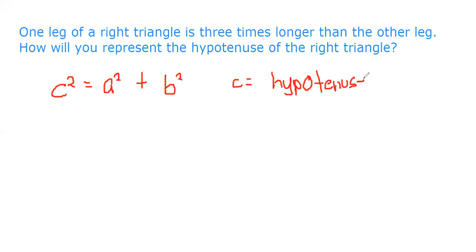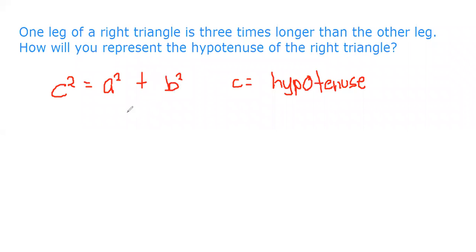The Pythagorean theorem states: c² = a² + b², where c is the hypotenuse and a and b are the other two legs. Let a = leg 1 and b = leg 2. Since one leg is 3 times the other, b = 3a.